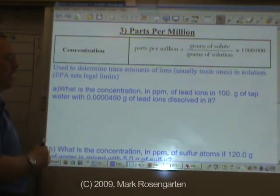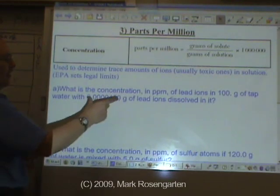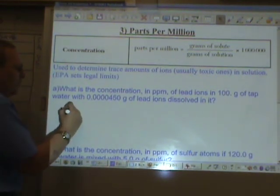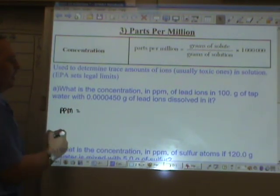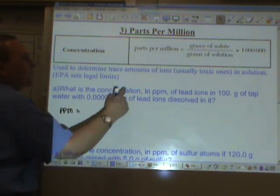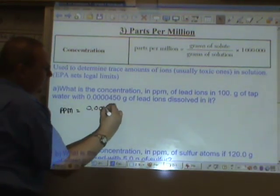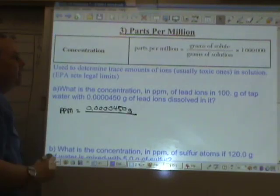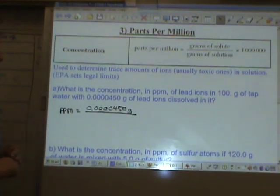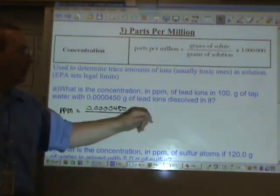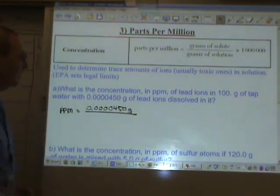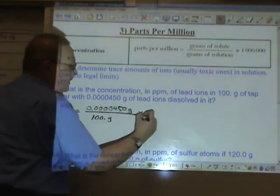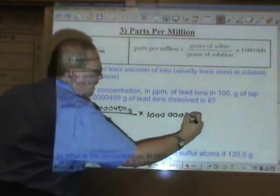So if we've got 100 grams of tap water and it's detected that this tiny amount of grams of lead ions are dissolved in it, then to get the parts per million, we're going to plug in the mass of solute, 0.0000450 grams, by the mass of the solution. Now, it says that we have 100 grams of tap water that has this much lead in it, 100 grams. Then the answer to that times a million.